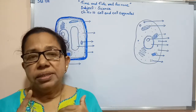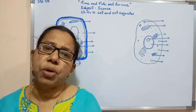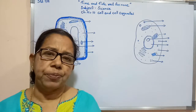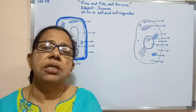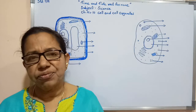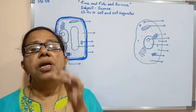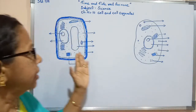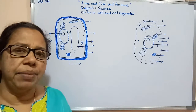Cell means the structural and functional unit of a body — it can be a plant body or an animal body. Cell organelles means the parts of a cell. A cell itself has a number of parts, and those parts are known as cell organelles. Here I have drawn a plant cell as well as an animal cell.